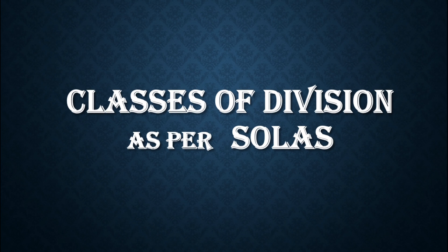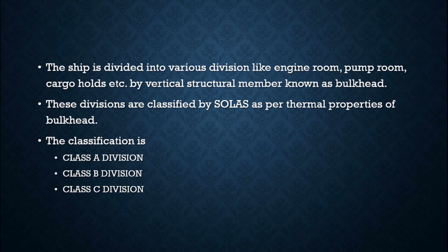In this video we will discuss the classes of division as per SOLAS. The ship is divided into various divisions like engine room, pump room, cargo hold, etc., by vertical structural members known as bulkheads. These divisions are classified by SOLAS as per the thermal property of the bulkhead: Class A division, Class B division, and Class C division.